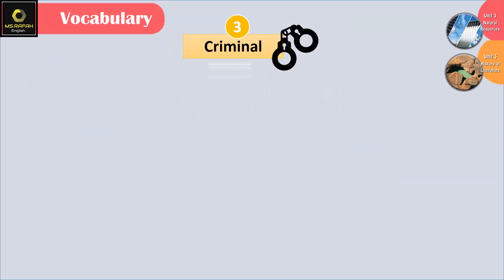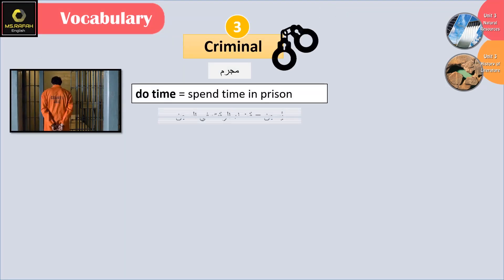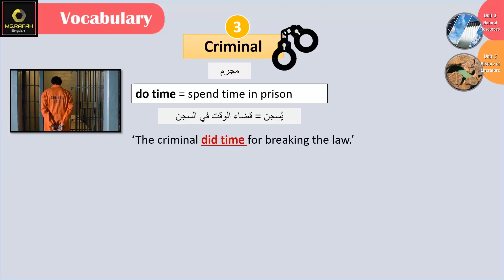Number three: criminal — do time. It means to spend time in prison. For example: 'The criminal did time for breaking the law.' Did time.